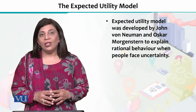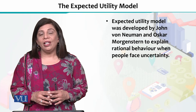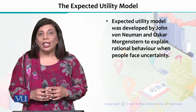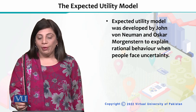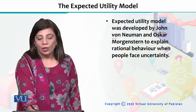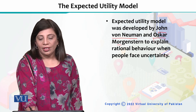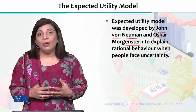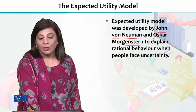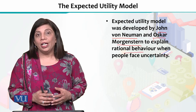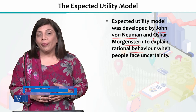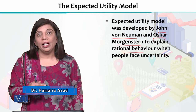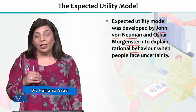In this section, I will briefly explain the concept of the expected utility model. The expected utility model was developed by John von Neumann and Oscar Morgenstern. They both developed a utility model and explained how individuals can make rational decisions in situations subject to uncertainty.